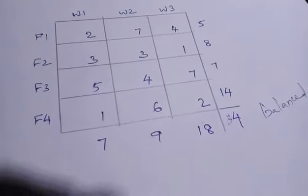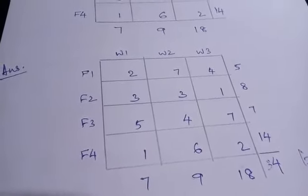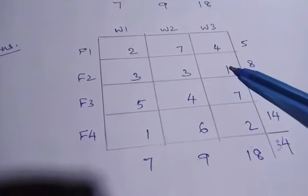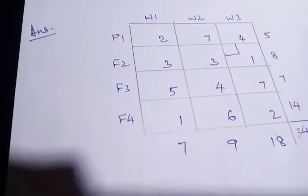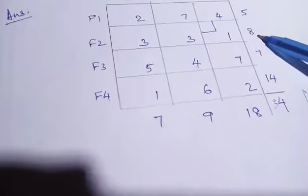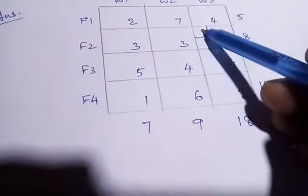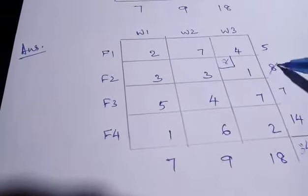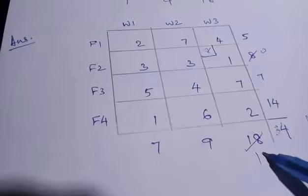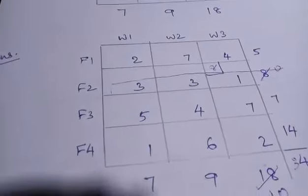The problem is balanced. Now we find the least value from the table and make the first allocation. The supply is 8 and the demand is 18; the lesser value is 8, so we allocate 8. This cell becomes 0, the demand becomes 10, and we cancel the full row.